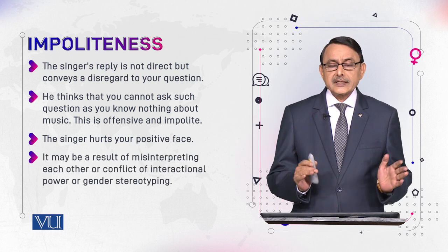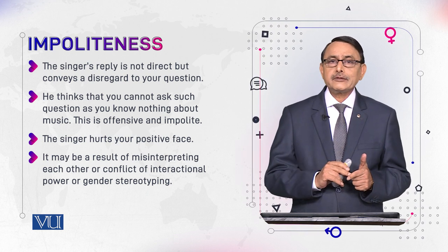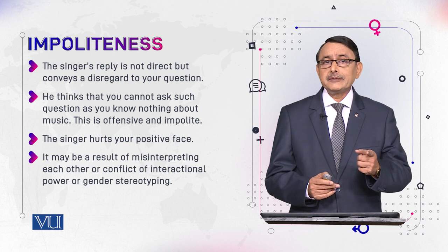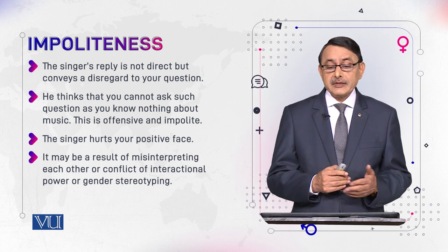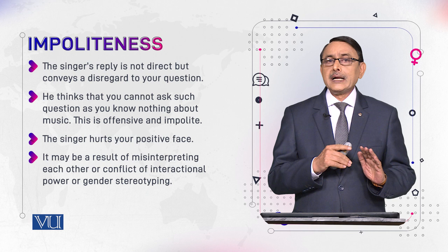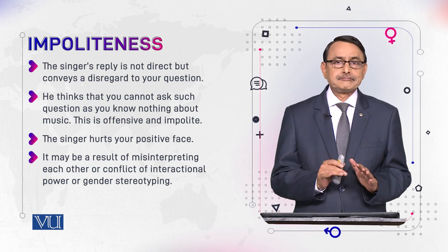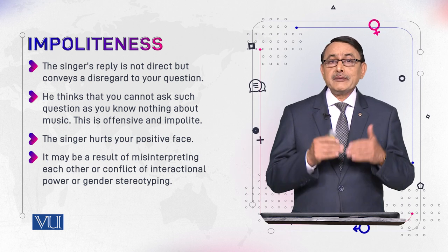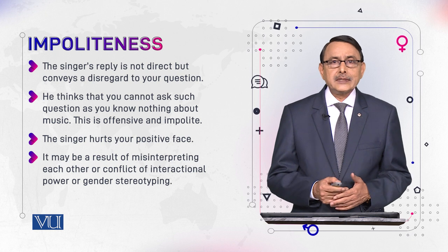This impoliteness may be the result of misinterpreting each other or conflict. First, it may be misinterpretation: your expectation was that the guest would show positive politeness and regard. Or it may be a conflict of interactional power — he is male and you are a woman, so it may also be a gender conflict. Which of these interpretations would be regarded as the main factor for assessing impoliteness depends on the factors we have discussed in this module.